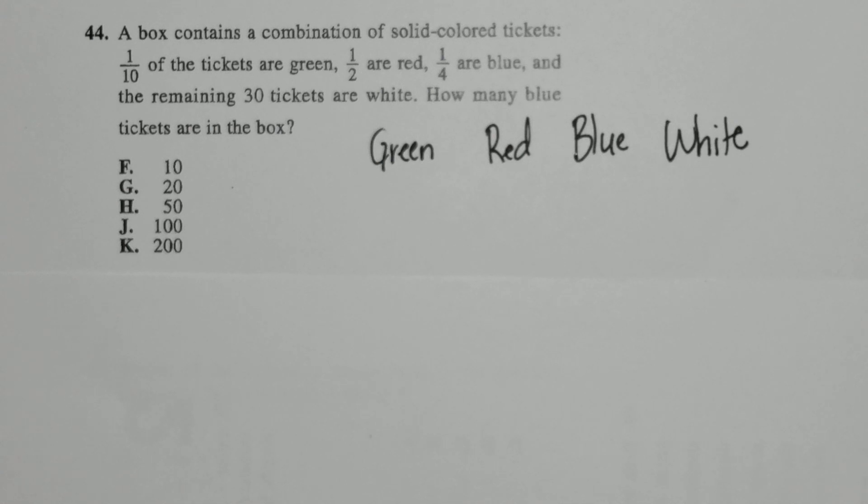At this problem, it states that we have a box that has a combination of solid colored tickets. The colors are green, red, blue, and white, and that accounts for 100% of the tickets.